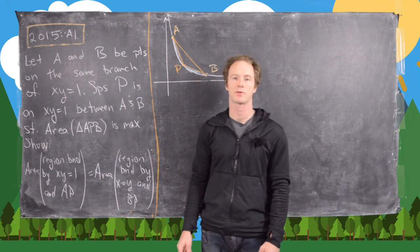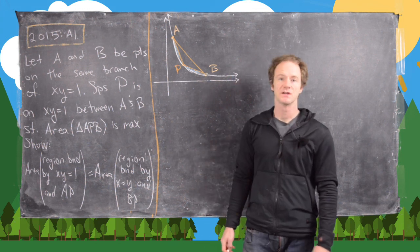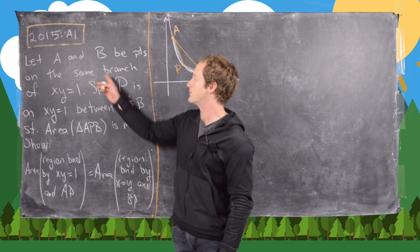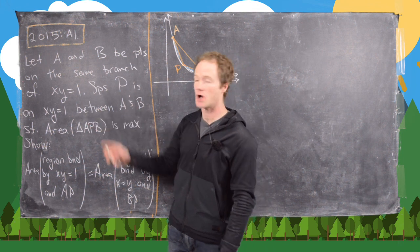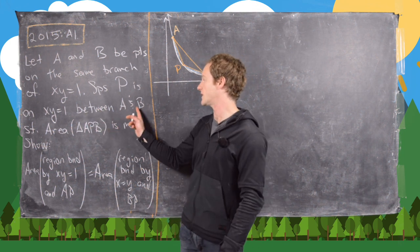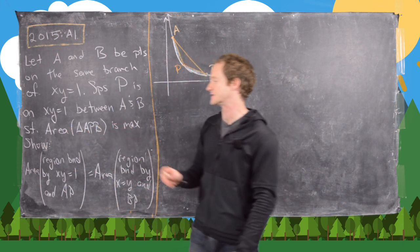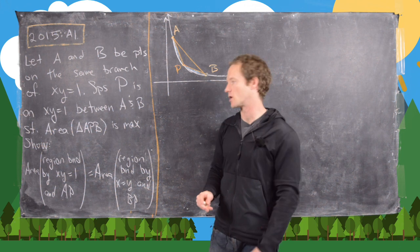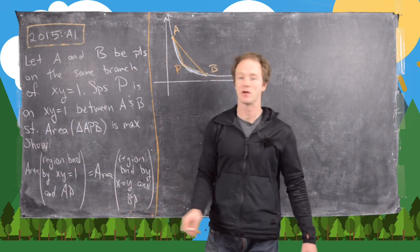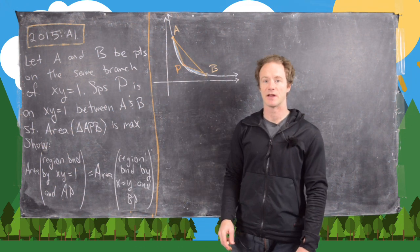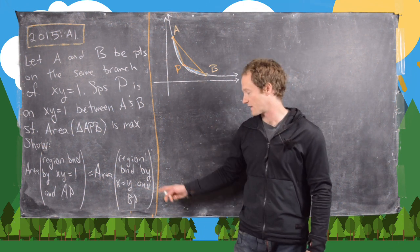In this video we're going to look at a solution to Putnam problem A1 from the 2015 exam. We want to let A and B be points on the same branch of the hyperbola XY equals 1, and P is also on the hyperbola between the points A and B in a way that the area of triangle APB is maximum. Our goal is to show that the area of the region bound by the hyperbola and the line segment AP is the same as the area of the region bound by the hyperbola and the line segment BP.